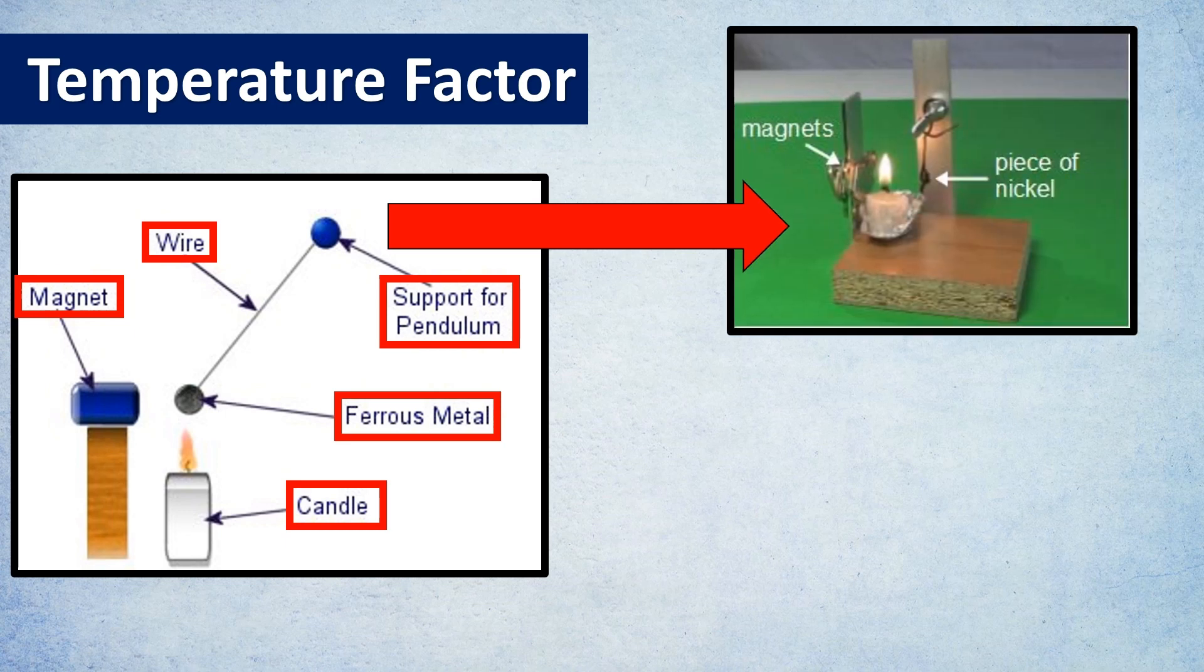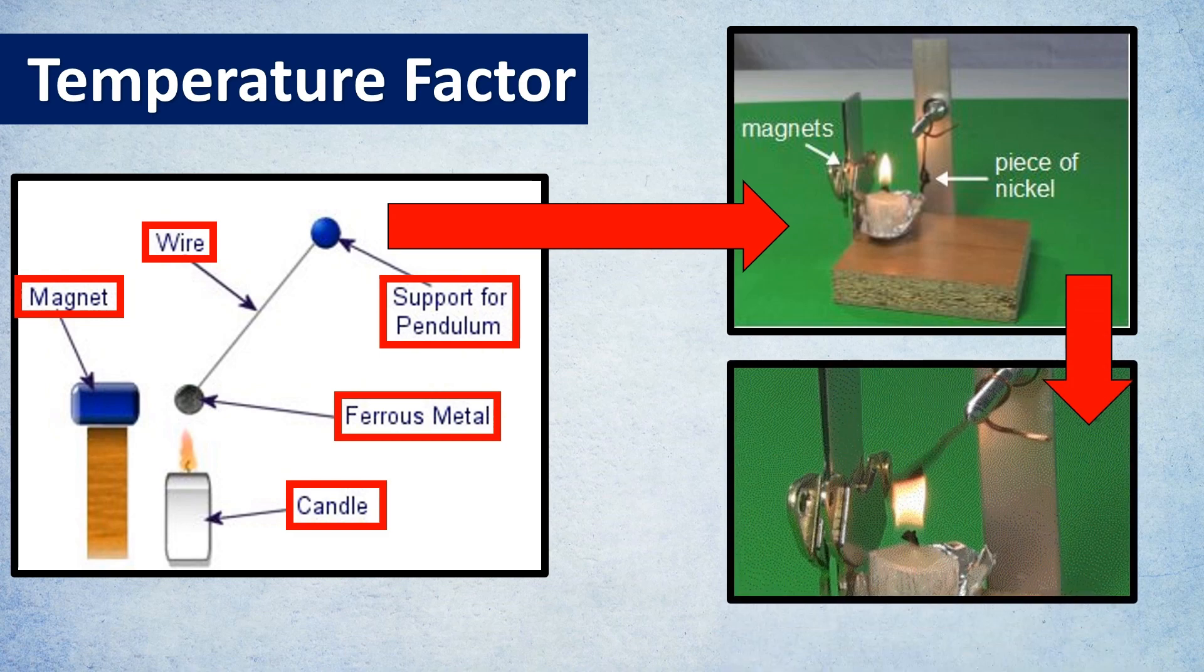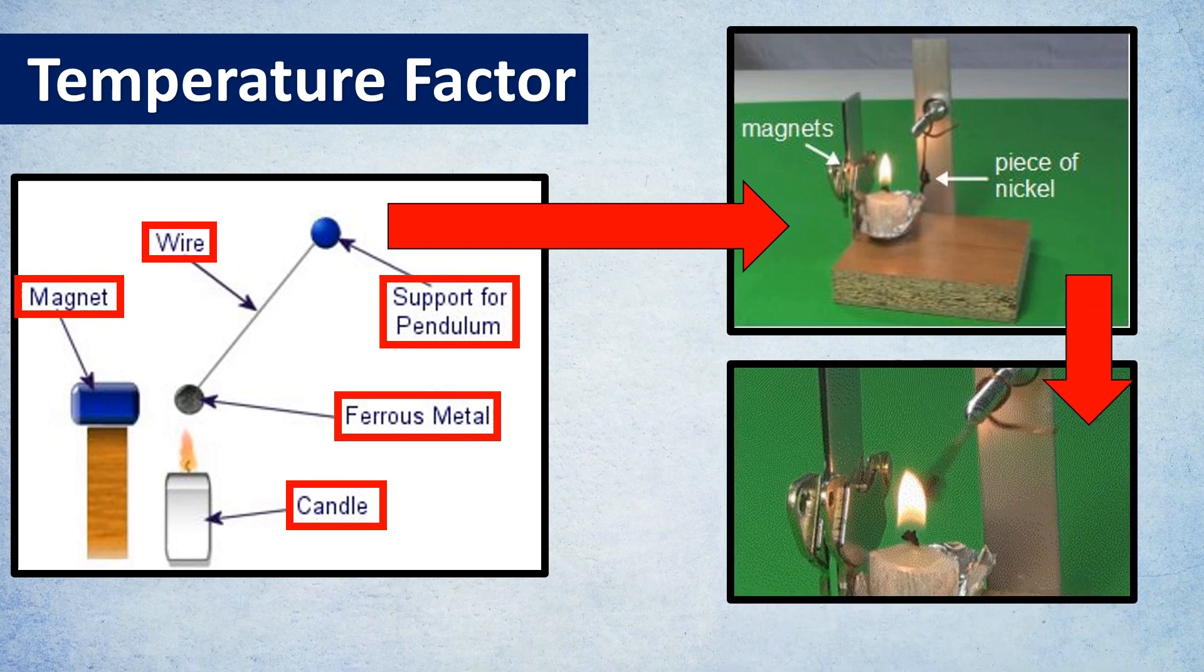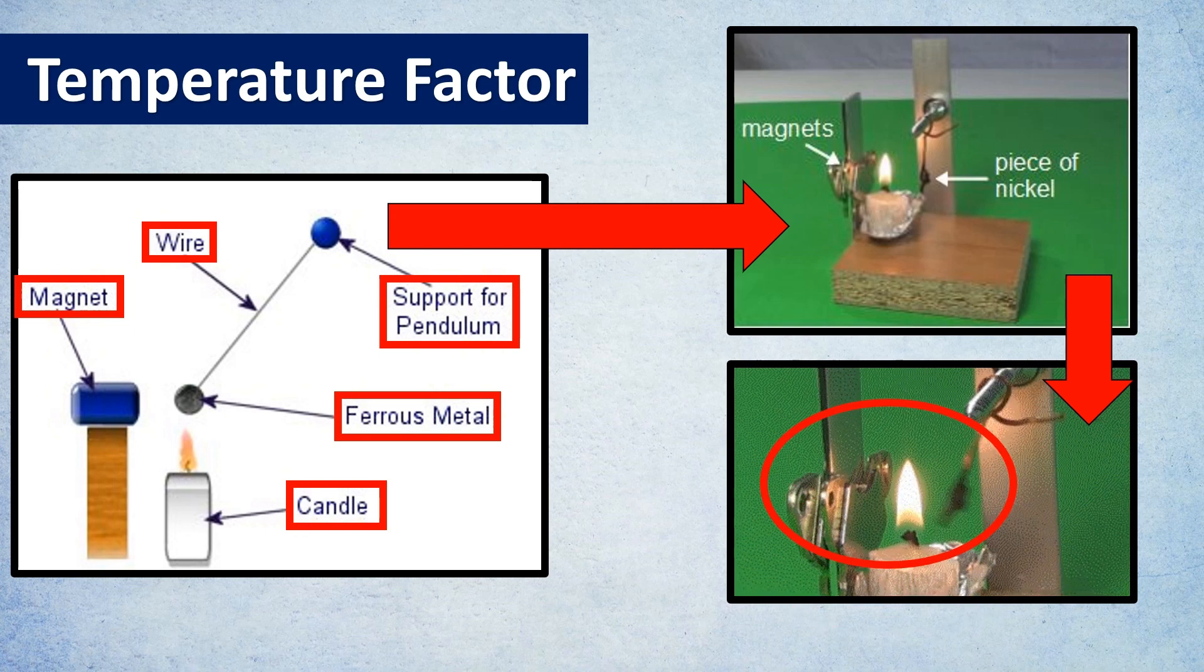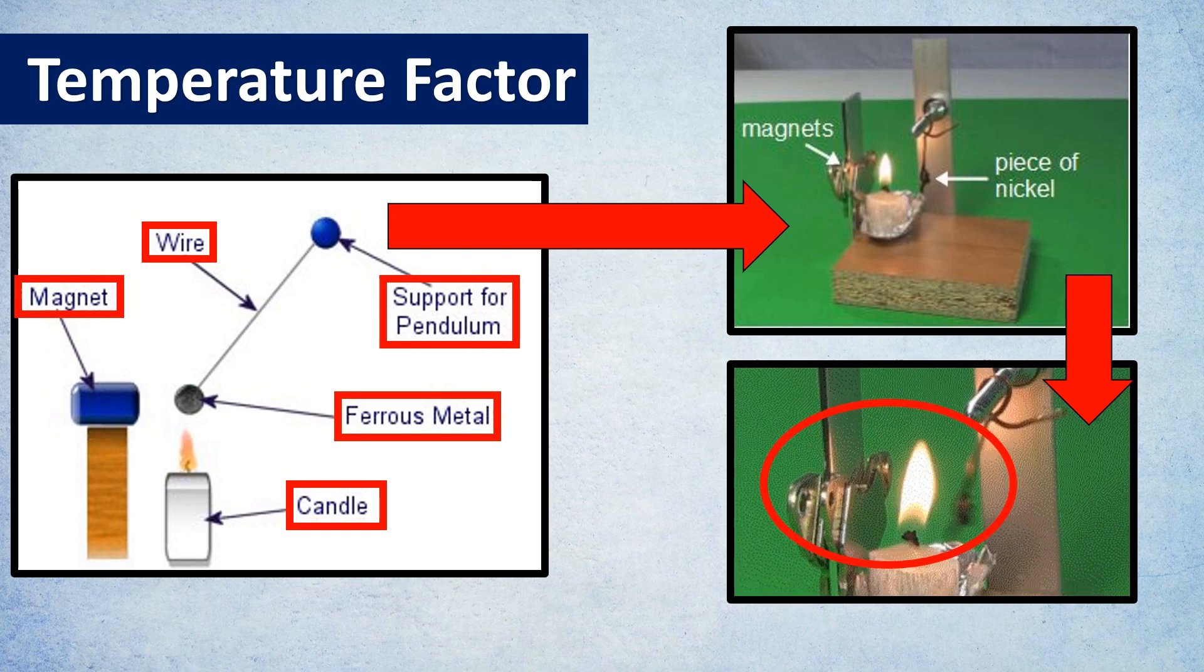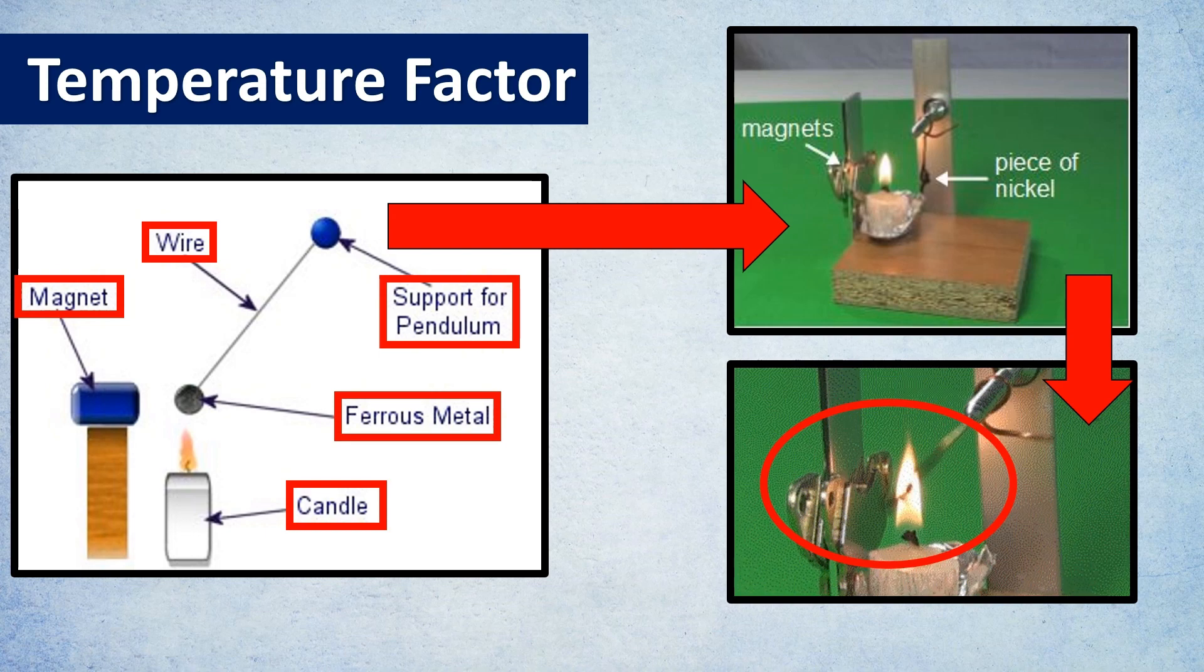In this assembly we'll try to push the piece of nickel. If you see here, when we push this piece of metal, because of high temperature the material loses its magnetic properties and comes back again. This is a very big issue when it comes to magnetic level gauges.